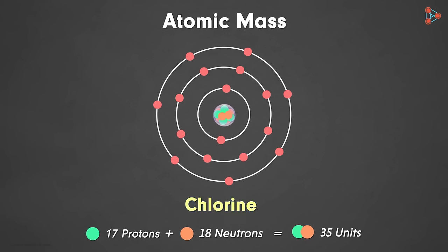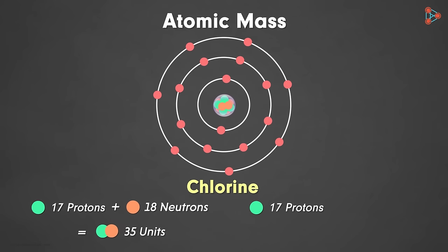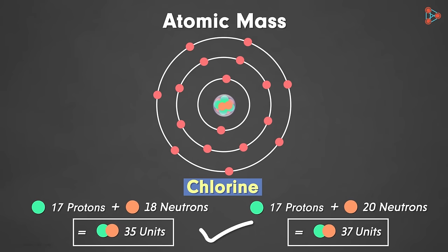A few chlorine atoms that exist in nature exhibit a different form. Some of them have 17 protons and 20 neutrons. That gives us the atomic mass of chlorine as 37 units. So which one is the correct atomic mass? In case of chlorine, both the atomic masses are right!